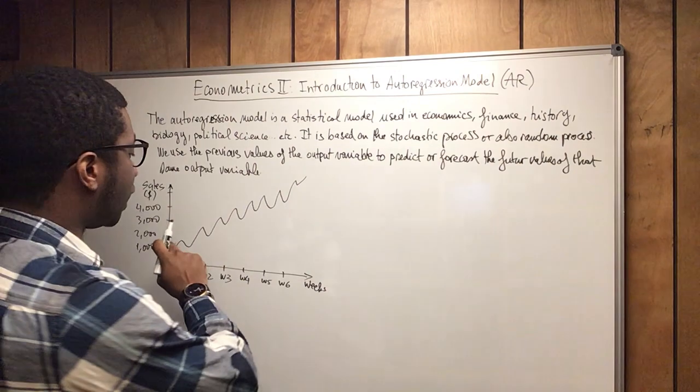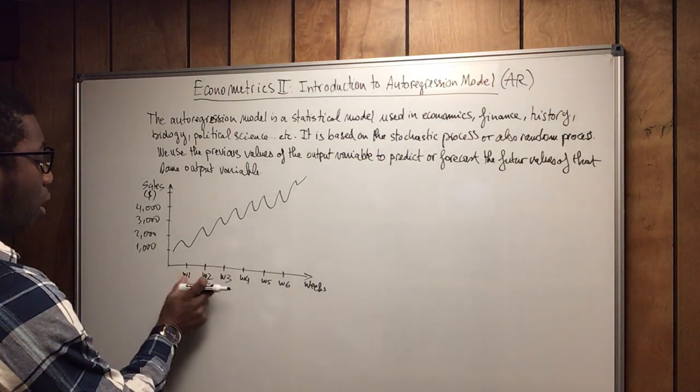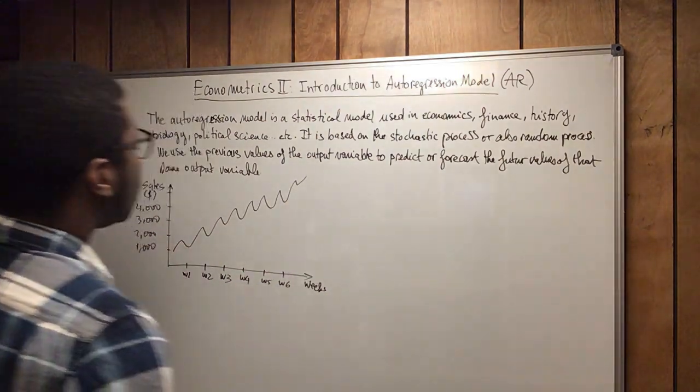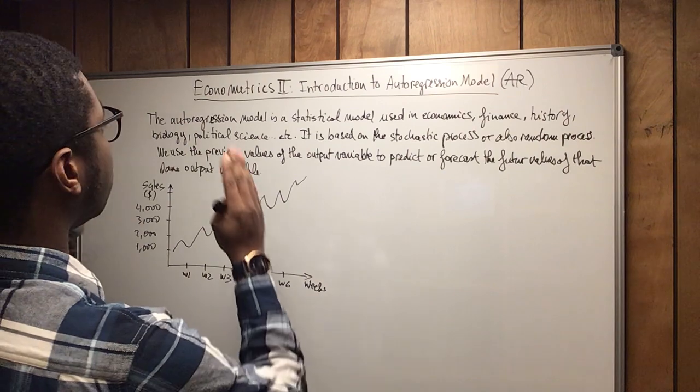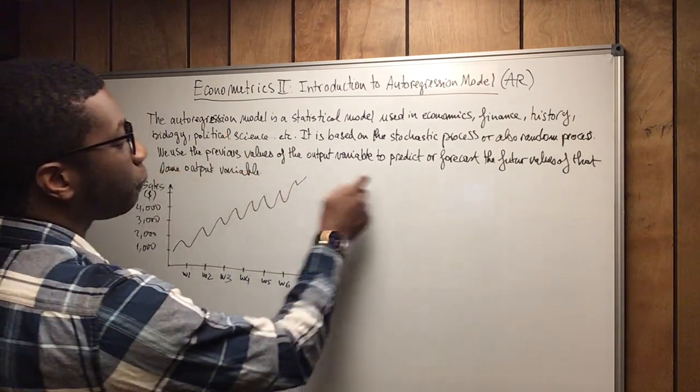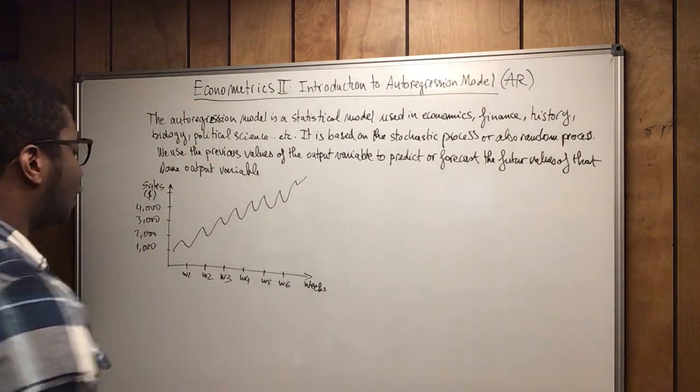So this here represent the sales you've made from week one all the way. So what is the particularity of the autoregression model here? As we said, we use the previous values of the output variable to predict or forecast the future values of that same output variable.